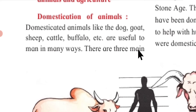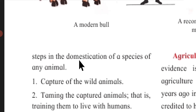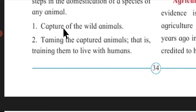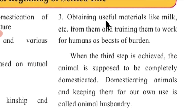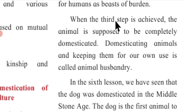There are three main steps in the domestication of a species of any animal. First, capture of the wild animals. Second, taming the captured animals, i.e. training them to live with humans. Third, obtaining useful materials like milk from them and training them to work for humans as beasts of burden. When the third step is achieved, the animal is supposed to be completely domesticated.